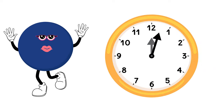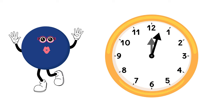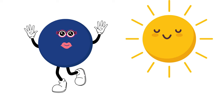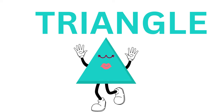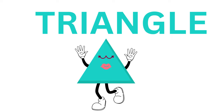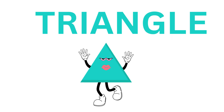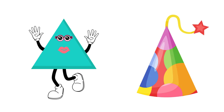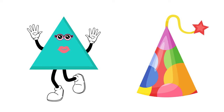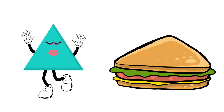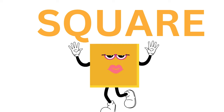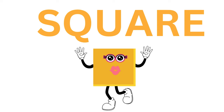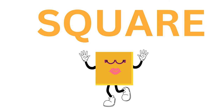I am circle. You can see me in the wheel, clock, and sun. I am triangle. You can see me in a party hat, sandwich, and pizza slice. I am square. You can see me in...